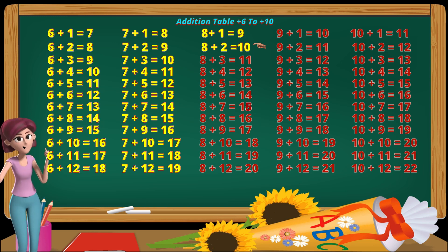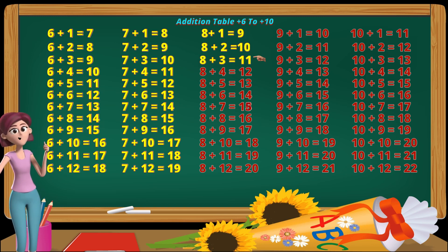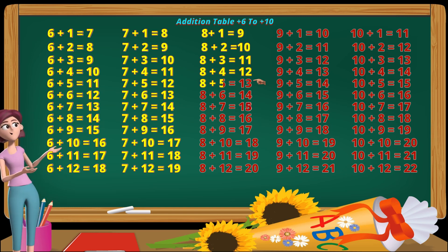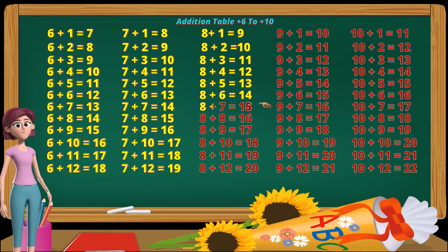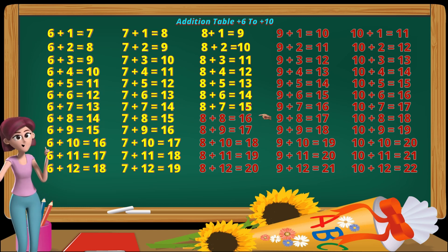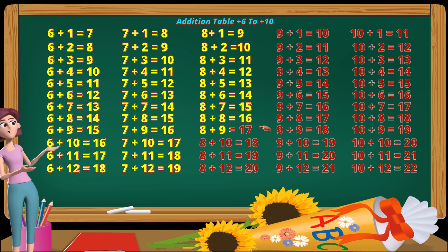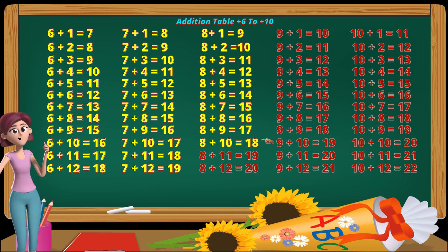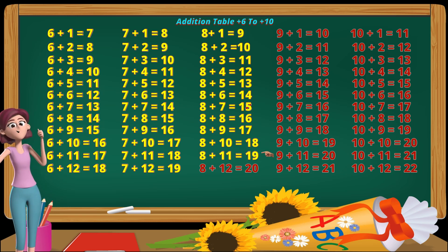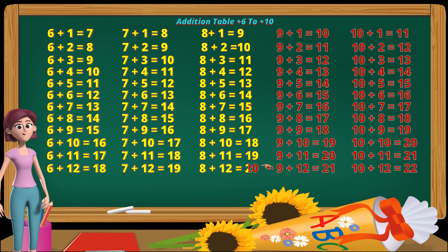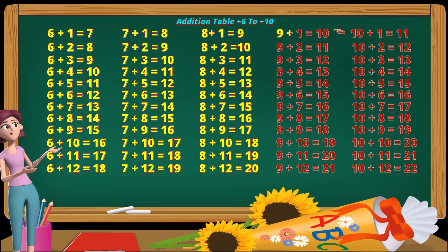Eight plus one equals nine. Eight plus two equals ten. Eight plus three equals eleven. Eight plus four equals twelve. Eight plus five equals thirteen. Eight plus six equals fourteen. Eight plus seven equals fifteen. Eight plus eight equals sixteen. Eight plus nine equals seventeen. Eight plus ten equals eighteen. Eight plus eleven equals nineteen. Eight plus twelve equals twenty.